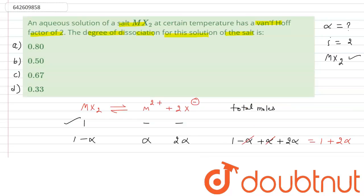Checking the options: option A is 0.8, which is not correct. Option B is 0.5, which matches our answer of α = 0.5. Option C is 0.67 and option D is 0.3, both wrong. Therefore, the correct answer is option B, with alpha equal to 0.5.